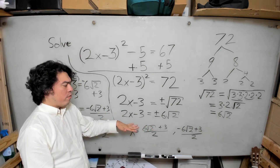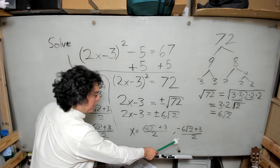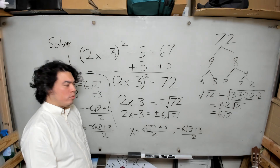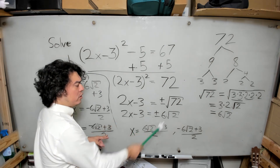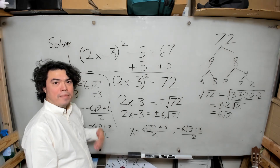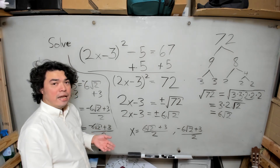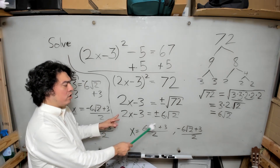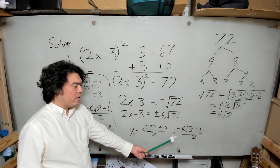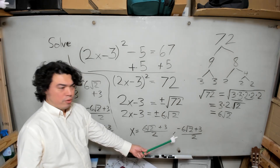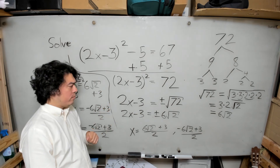From there, to get our final roots, we set the left-hand side first equal to positive 6 root 2 and isolated x, giving the first result. Then we set it equal to negative 6 root 2 and isolated x to get the second root. And that's how you solve this problem.